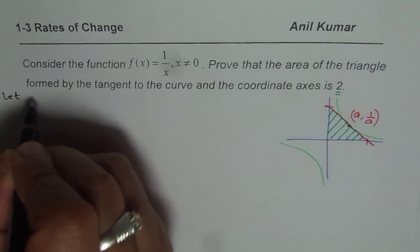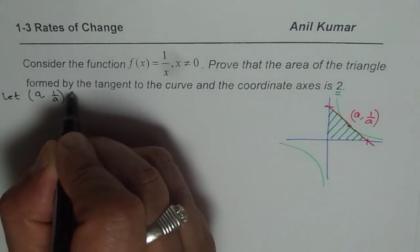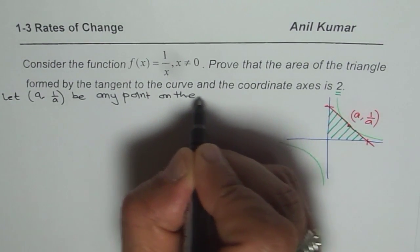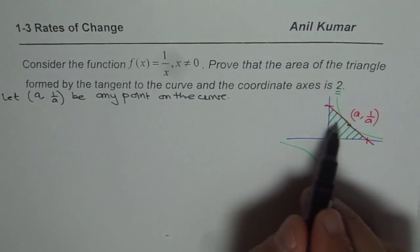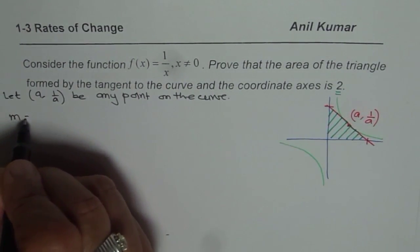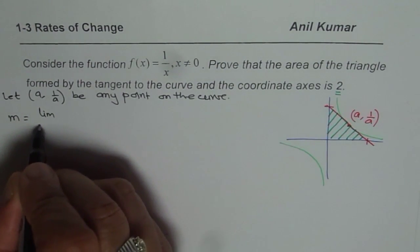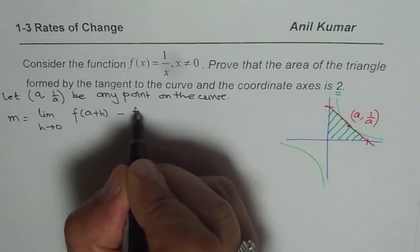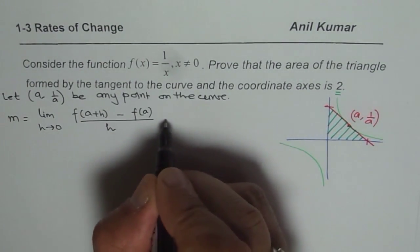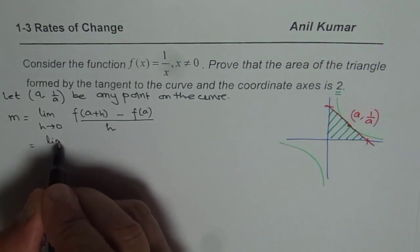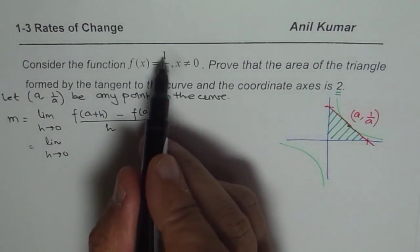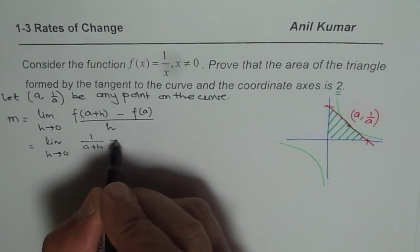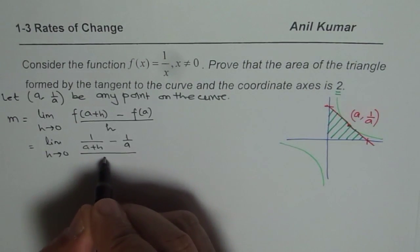Let (a, 1/a) be any point on the curve. The slope of the tangent at this point is found using the limit definition: slope = limit as h approaches 0 of [f(a+h) − f(a)] / h. Substituting f(x) = 1/x, f(a+h) = 1/(a+h) and f(a) = 1/a, so we get [1/(a+h) − 1/a] divided by h.